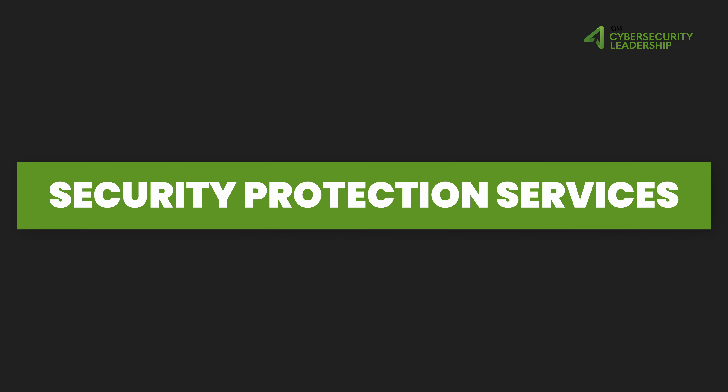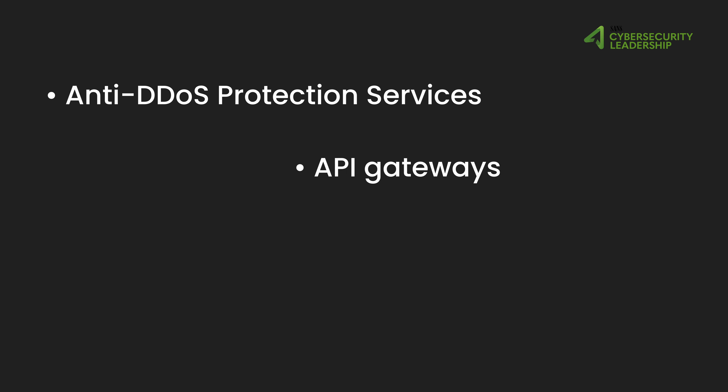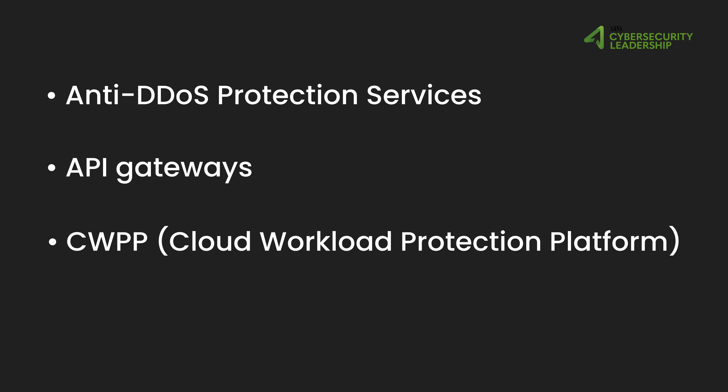For security protection services, this is really about focusing on the use of cloud native and also on-prem security standards to safeguard applications. The area evolves from an initial ad hoc adoption of basic cloud native security components to a more sophisticated and optimized use of comprehensive cloud-based security services, such as DDoS protection, API gateways, and CWPP — cloud workload protection platforms. The maturity grows to include the enterprise standard for protection profiles with a focus on fine tuning and optimizing security measures through threat modeling and red team exercises.